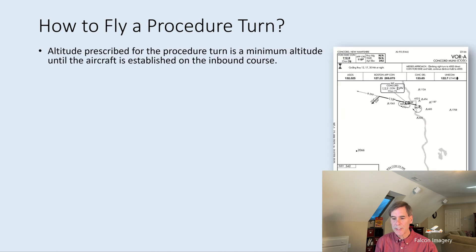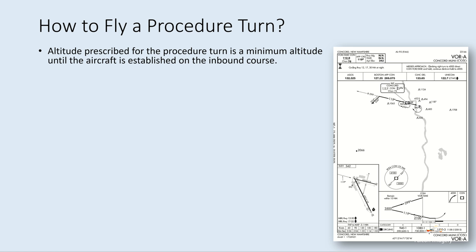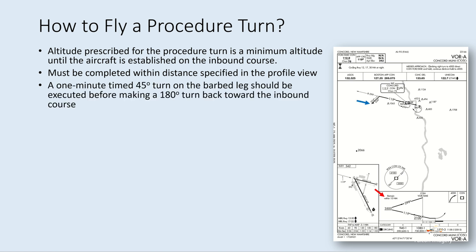So how do we actually fly the procedure? The altitude prescribed for the procedure turn is a minimum altitude until the aircraft is established on the inbound course. So if the altitude says 3,500 feet outbound, you're not going to start descending to, say, 2,100 feet until you're established back on the inbound course. You must complete the turn back inbound within the distance specified in the profile view — in this example, within 10 nautical miles of the final approach fix, the Conquer VOR.